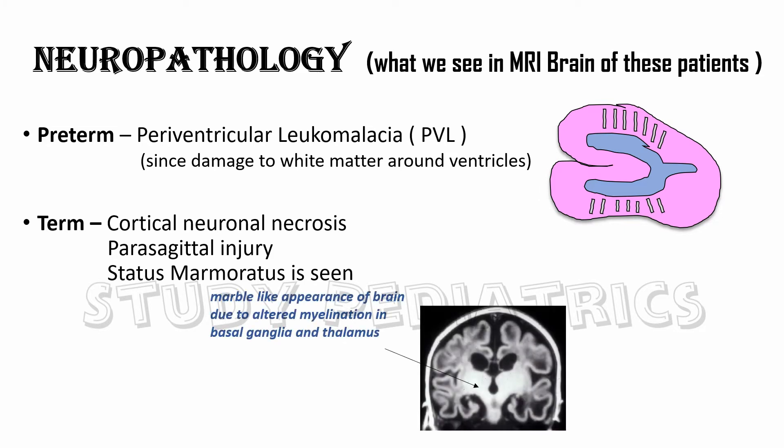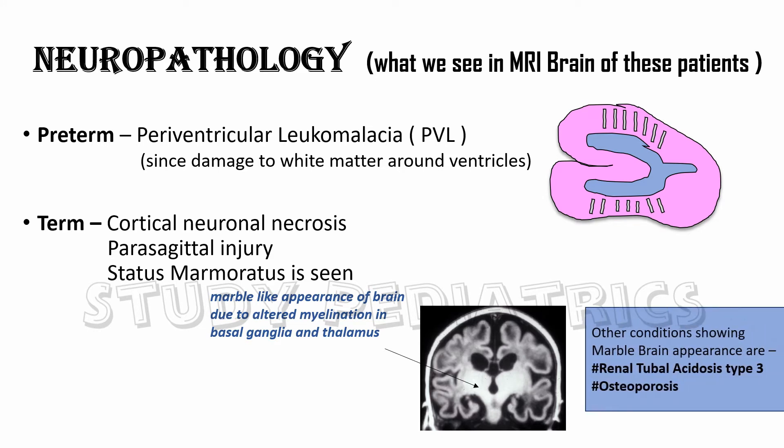This marbling is seen around the basal ganglia and thalamus. Other conditions showing marble brain appearance are renal tubular acidosis type 3 and osteopetrosis.